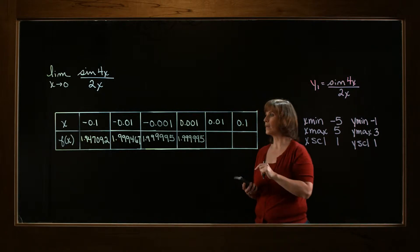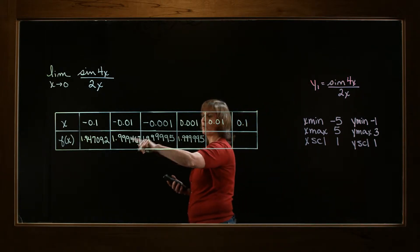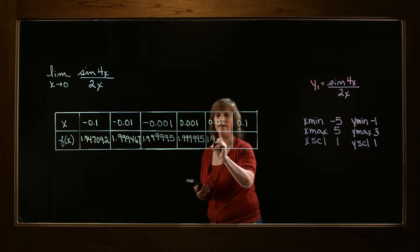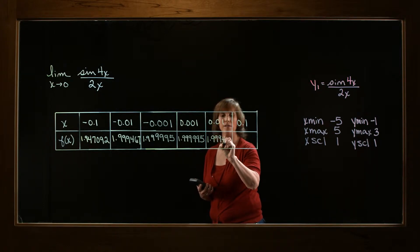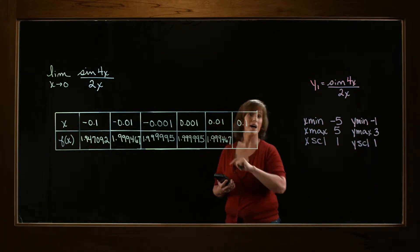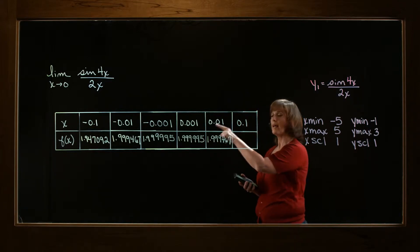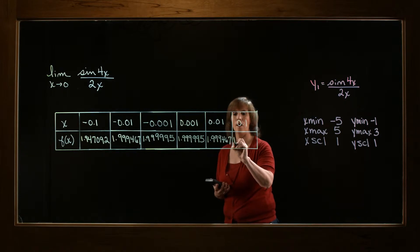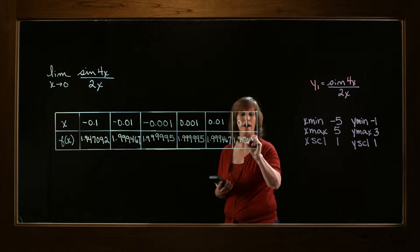And when I plug this one in, I will get the same thing as when I plugged in the negative version. So this will be 1.999467. And finally, I'll plug in 0.1. It will give me the same result as when I plug in negative 0.1. And I get 1.947092.